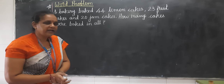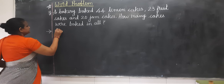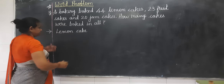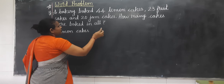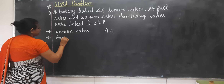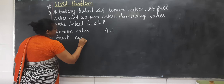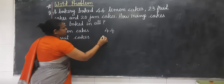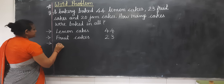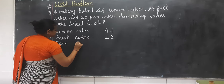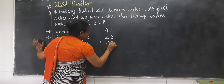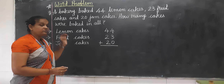That means we have to do the addition. First one is lemon cake — how many? 44. Next is fruit cake — how many? 23. You have to write the number. Now next is jam cake — 20.